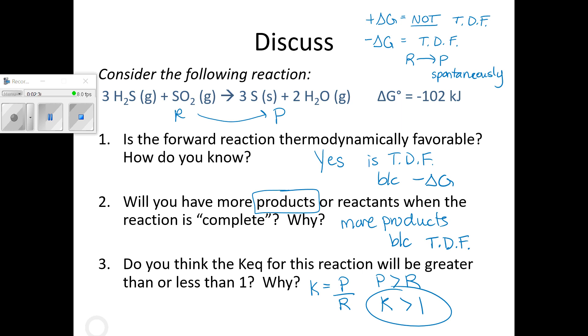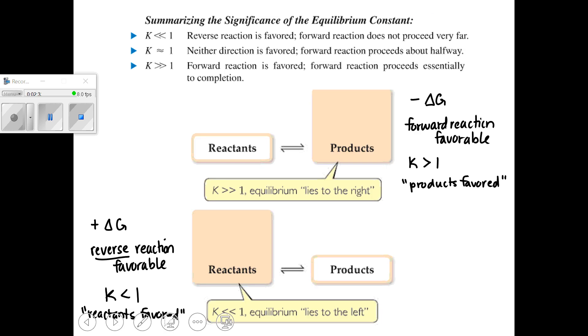In fact, we notice there's this relationship between the sign of delta G and the value of K. If your delta G for a reaction is negative, that means the forward reaction is favorable, and your K is going to be greater than 1. You're going to have mostly products when you reach equilibrium. If your delta G is positive, that means that forward reaction is not favorable. So you won't make very many products. You're going to end up with mainly reactants, and you'll see your K value will be less than 1.